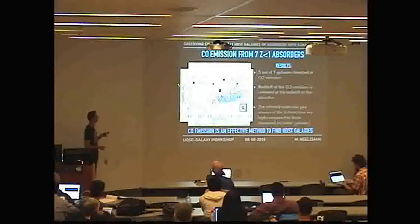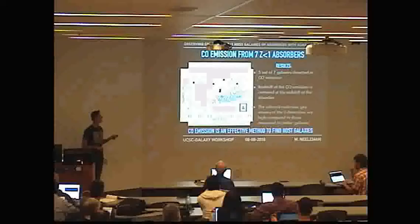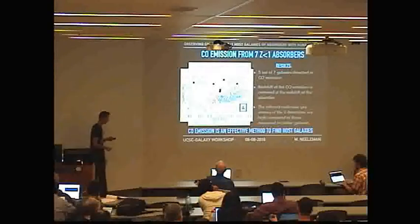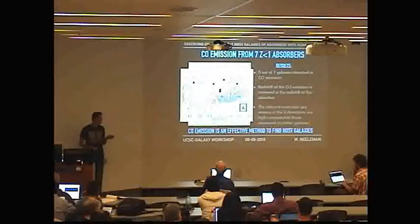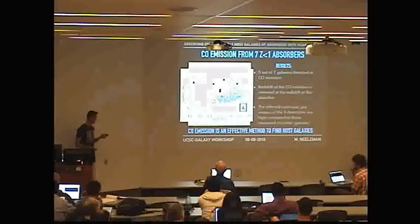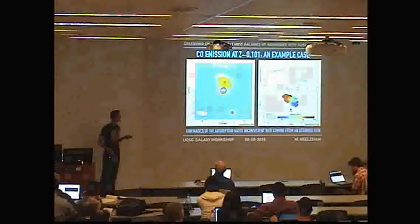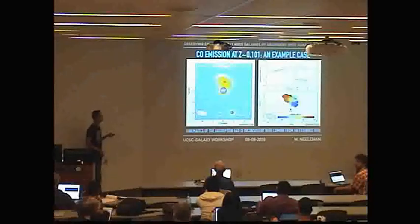When we convert these fluxes into masses, we find some interesting preliminary results. The sample size of five is small, but we can see their molecular masses compared to estimates of the stellar mass. There are quite large uncertainties, but these are interesting systems with a lot of molecular gas. The main point is that this is a very effective way of detecting these galaxies.